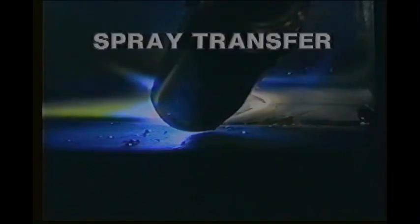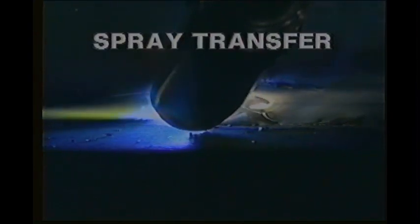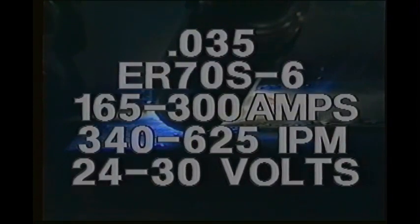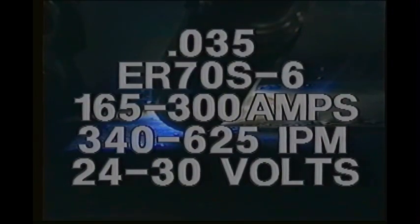Spray transfer is used for metals about an eighth inch and thicker in the flat position. The characteristic humming sound is a result of adequate voltage and amperage to pinch the wire off in small droplets. Spray transfer also requires an argon-rich shielding gas. On carbon steel material, up to 5% oxygen or 10% CO2 can be mixed with argon to provide proper puddle wetting action and prevent undercut. A common wire diameter of .035 steel will operate best in the range of 165 to 300 amperes, 340 to 625 inches per minute of wire feed speed, and 24 to 30 load volts.